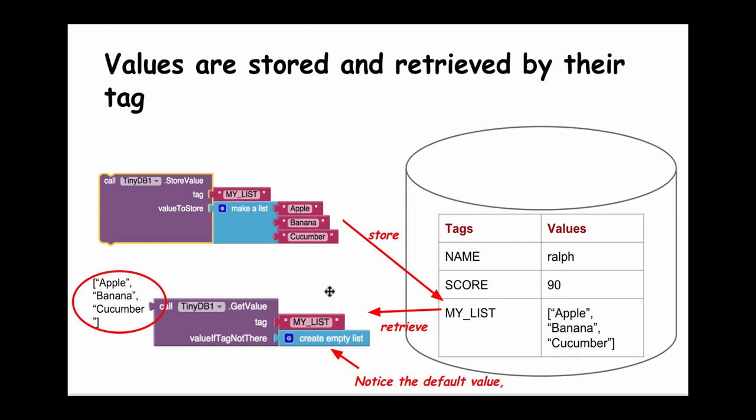When you want to retrieve it, the same principle applies. You need to provide the tag associated with your data, and you will get back the list that you stored with that tag. And again, notice the default value. In this case, if there is no such list as MY_LIST in the database, we want to return the empty list as the default value so that we can continue to use this in list operations.